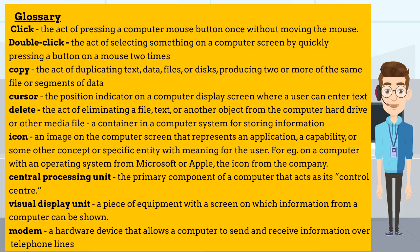Click — the act of pressing a computer mouse button once without moving the mouse. Double click — the act of selecting something on a computer screen by quickly pressing a button on a mouse two times. Copy — the act of duplicating text, data, files, or disks, producing two or more of the same. File — a collection of segments of data. Cursor — the position indicator on a computer display screen where a user can enter text.